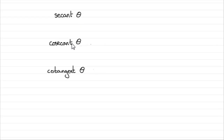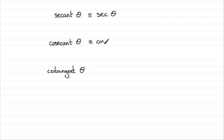Now before I explain what these functions are, you won't often see them written like this. You might see them abbreviated. For secant theta, you'll most probably see what we call sec theta. And cosecant theta, we often write as cosec theta. And for cotangent theta, you'll see cot theta.